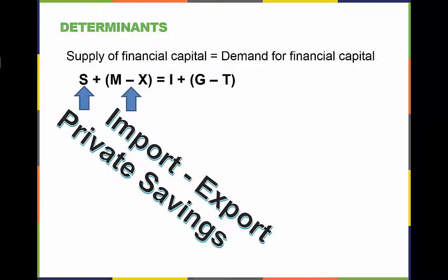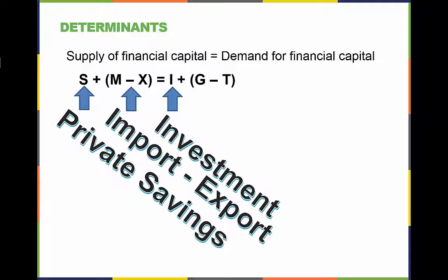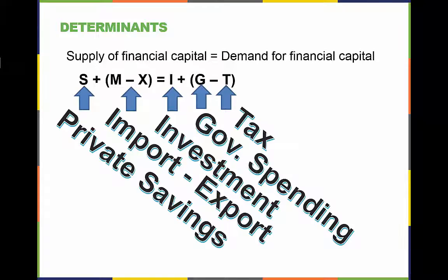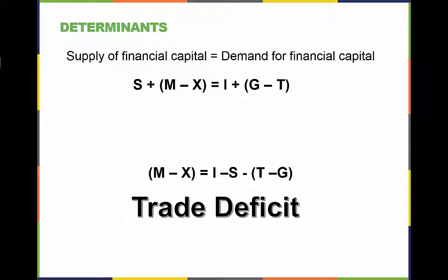The demand side of financial capital is private, non-governmental investment, denoted by I in the equation. G, or governmental spending minus taxation, is the other component of the demand side. At the bottom of this slide, we see the equation altered to show a trade deficit. In the case of a trade deficit, the saving and taxation component is not sufficient to supply sufficient capital to cover the investment and government spending in an economy.